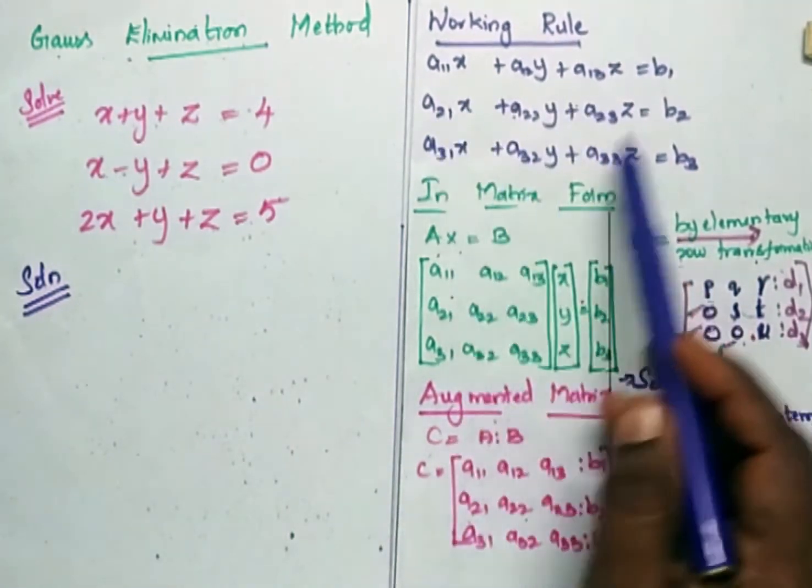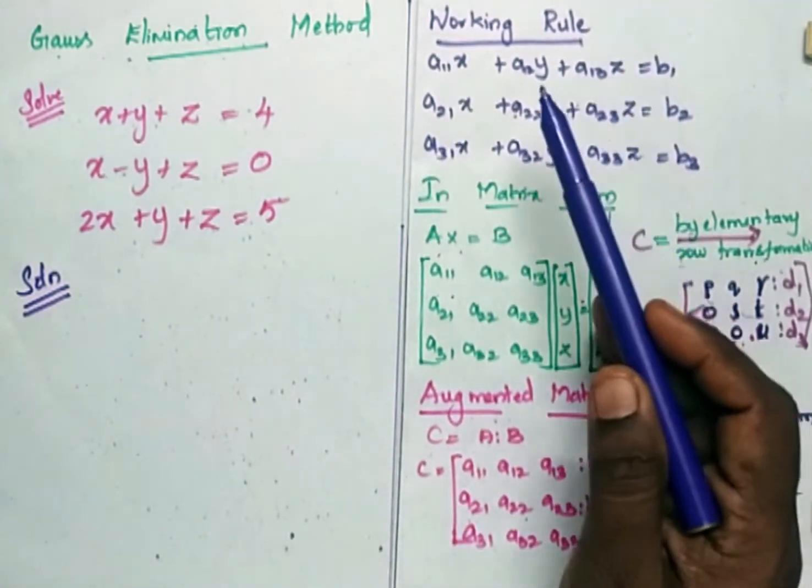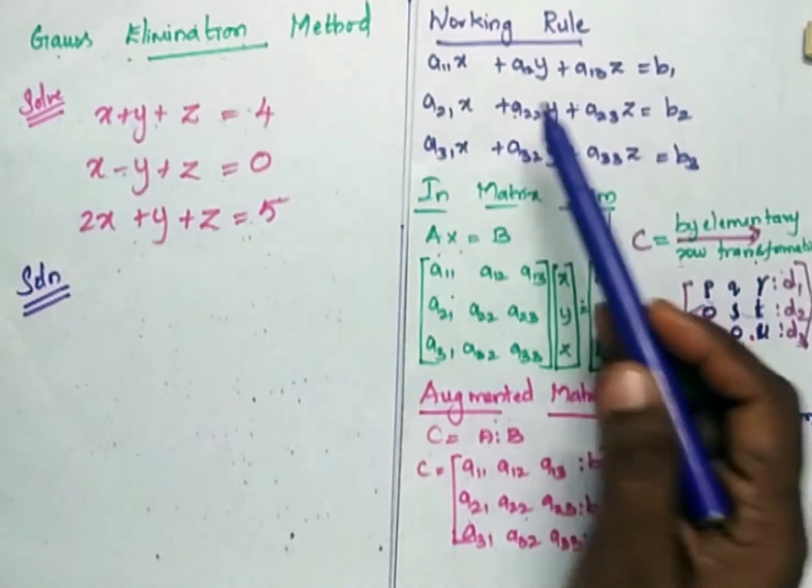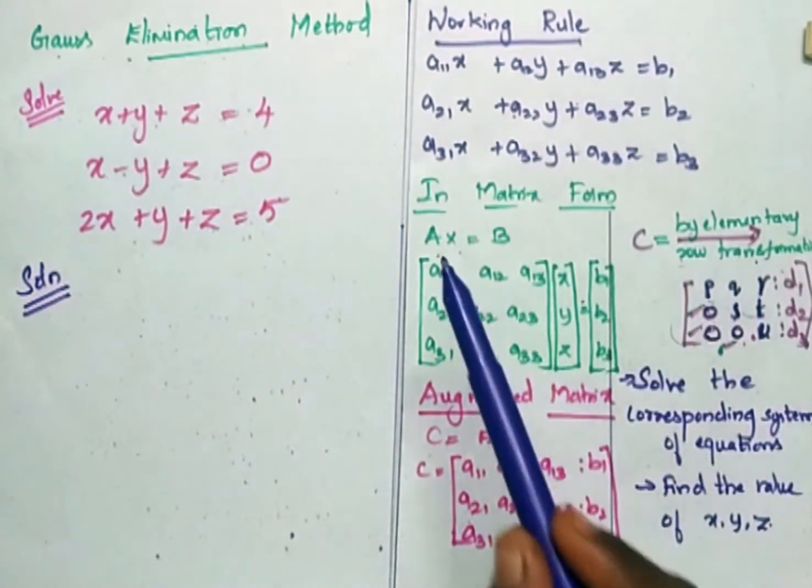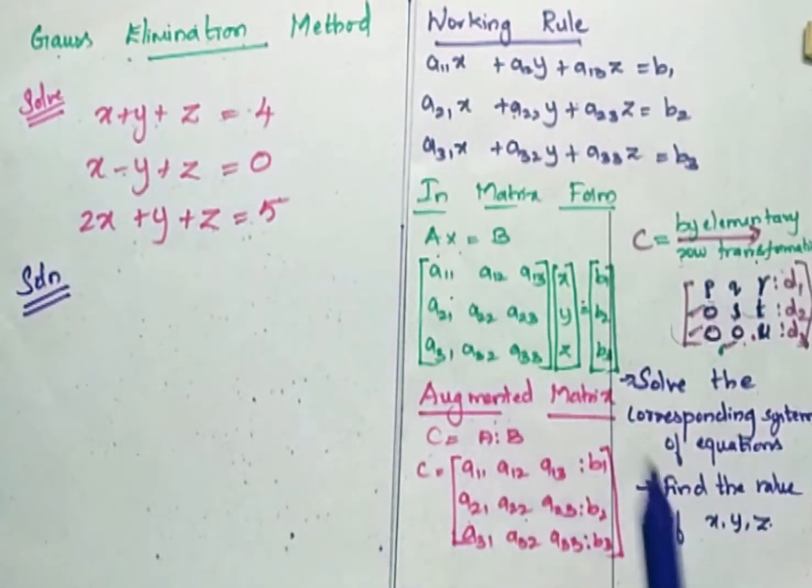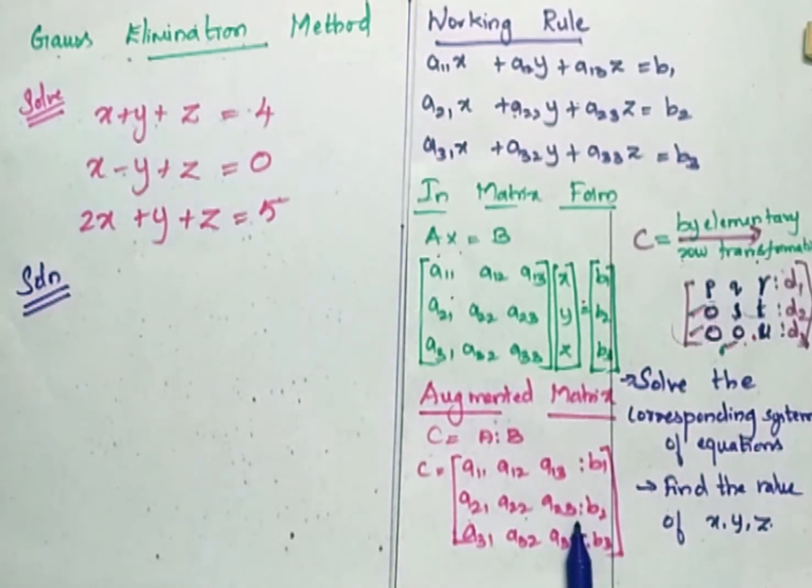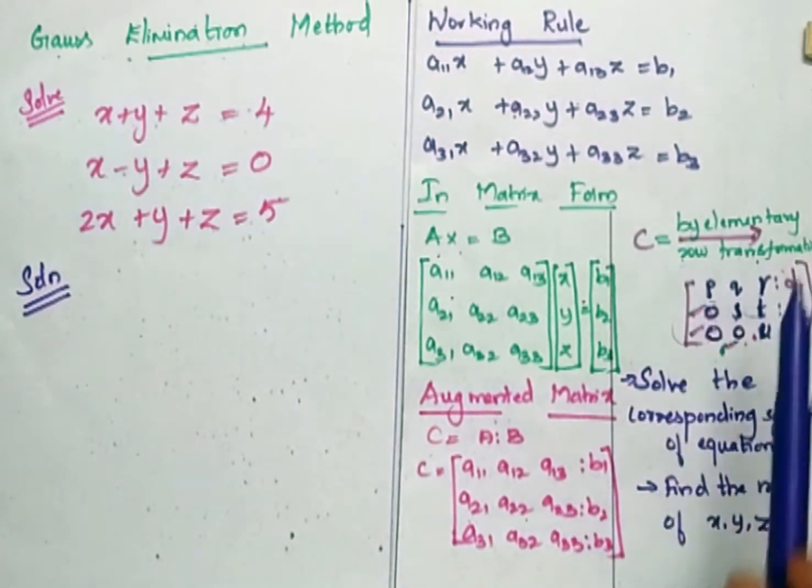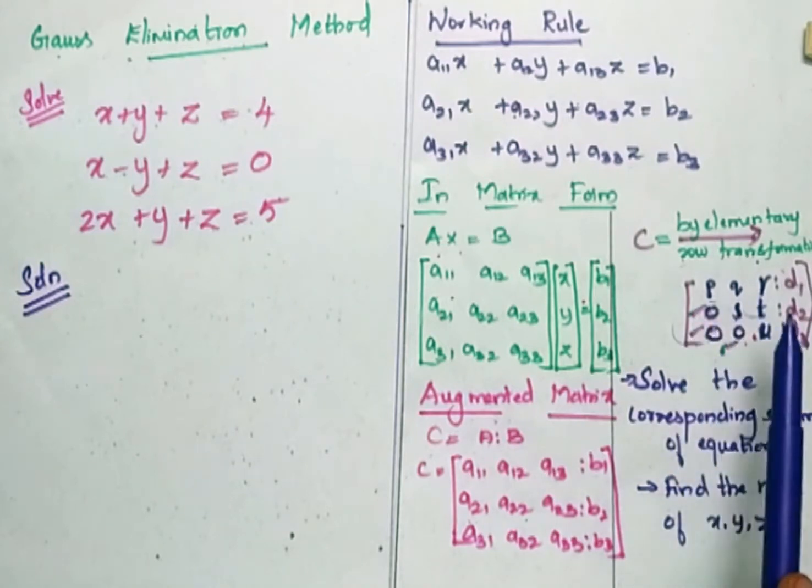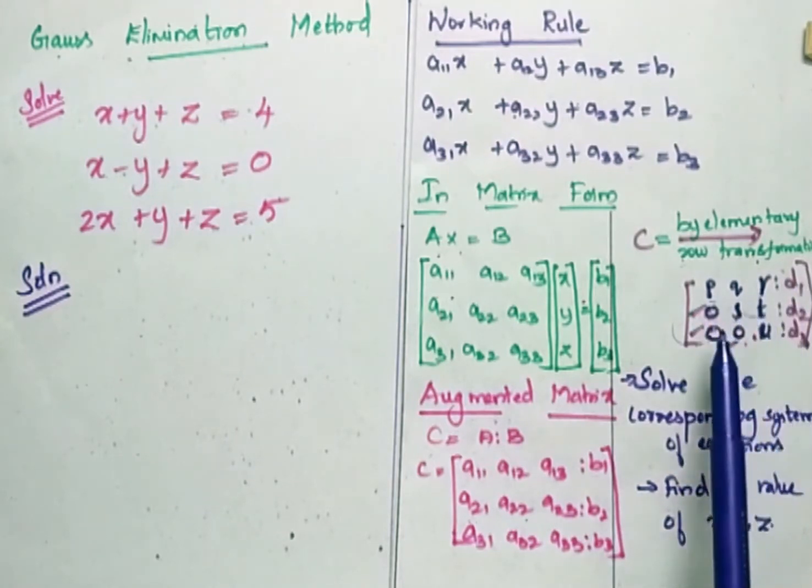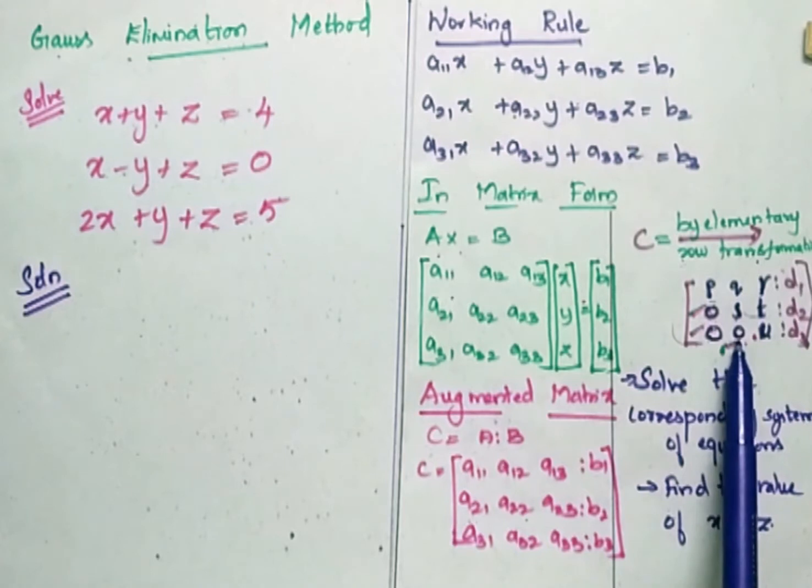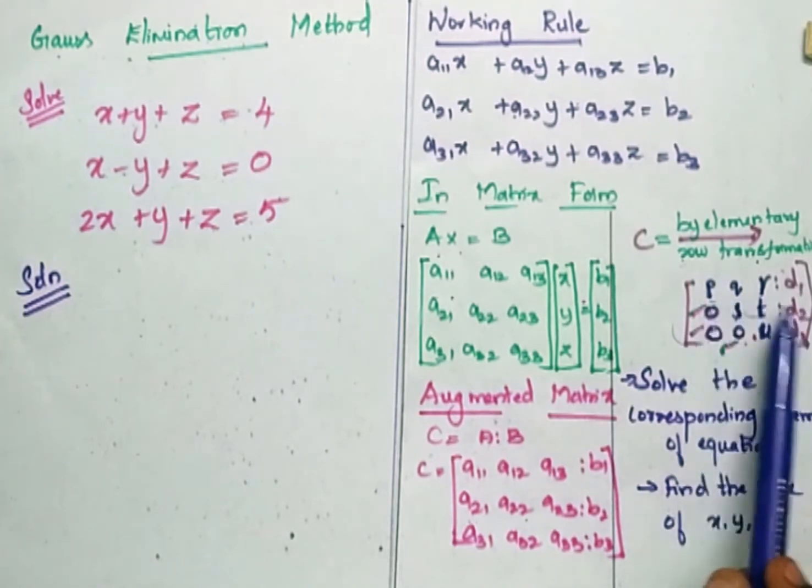Now this is the system of equations that has been given. The system of equations given has to be converted into matrix form, that is Ax is equal to B. Now this has to be replaced as augmented matrix where C is equal to A is to B. Now this augmented matrix by elementary row transformation has to be reduced to this format so that you obtain zeros in these places and numbers, any values, elsewhere.